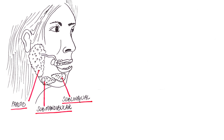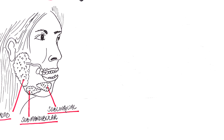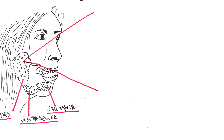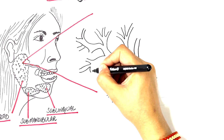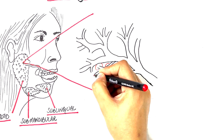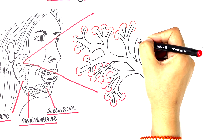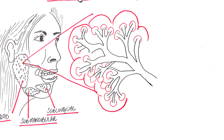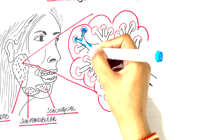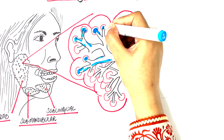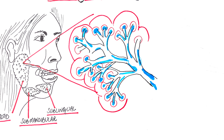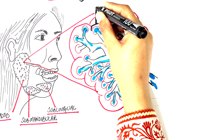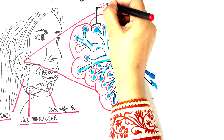In order to understand the histoanatomy of these glands, we need to zoom in on a small portion of a gland. What we can see here resembles almost a bunch of grapes. These are the two main parts of the salivary glands: the secretory unit or acini, represented by the grapes, and the ductal system, represented by the stems of the bunch of grapes.